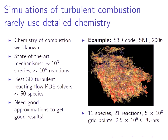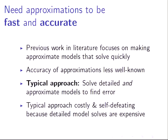What we need is for these approximations to be both fast and accurate. Fast means the approximation solves quickly. However, the accuracy of the approximations is a lot less well-known. What people typically do is solve as detailed a model as they can, solve their approximate model, subtract, and that's the error. The problem is that for a turbulent 3D combustion simulation, the simulation takes 2.5 million CPU hours — so there's no way to do that. Consequently, people use 0D surrogate problems to look at the error, which don't exactly resemble the flow and can be solved on a laptop. You're taking it on faith that the error in your 0D flow is the same as in the 3D simulation, which makes it costly and self-defeating.